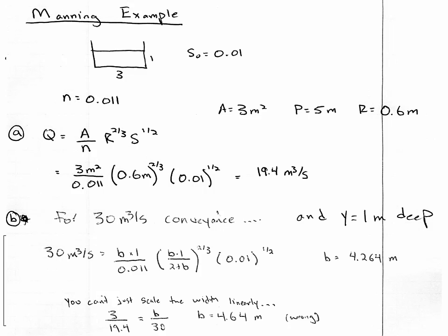Manning's equation is not dimensionally homogeneous — the units don't work out in the traditional sense. The seconds in the flow rate are built into the N value because this is an empirical equation based on observation, not a fundamentally derived equation. N is essentially a friction factor calibrated from observed flow data. The equation fits the data well but is not bulletproof.